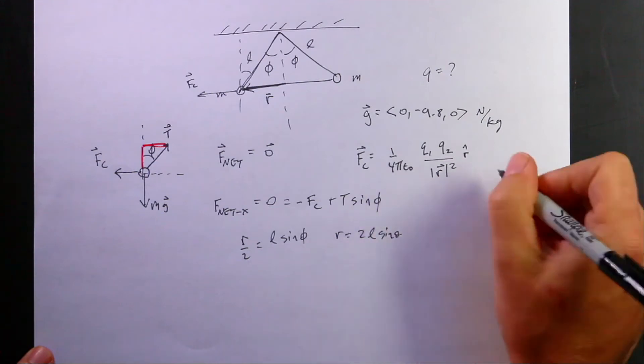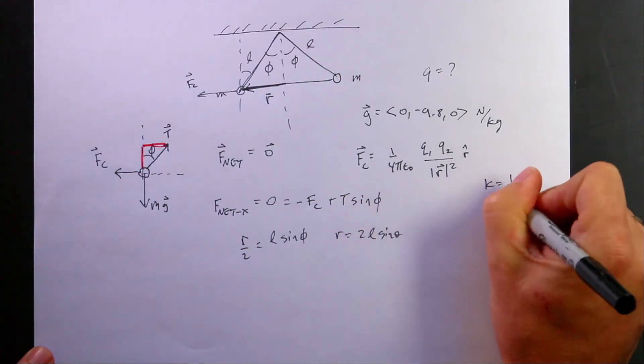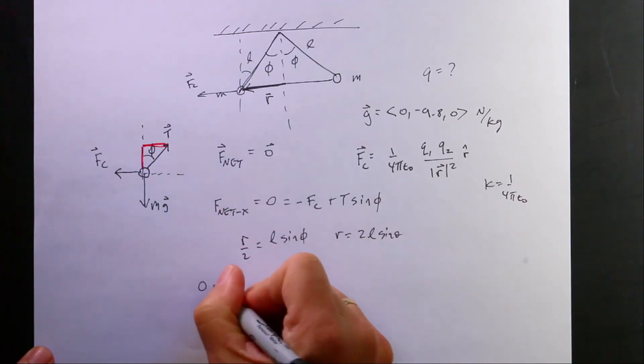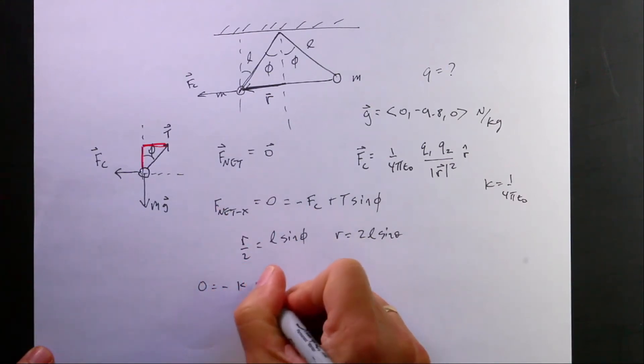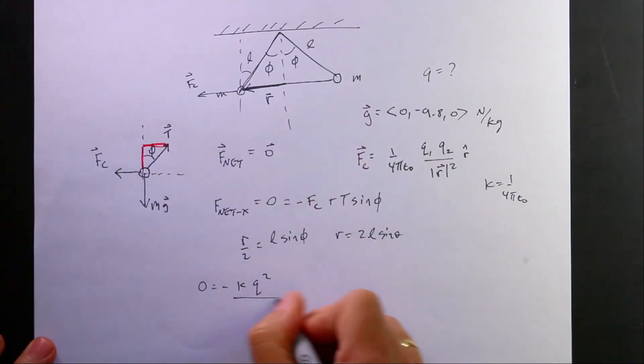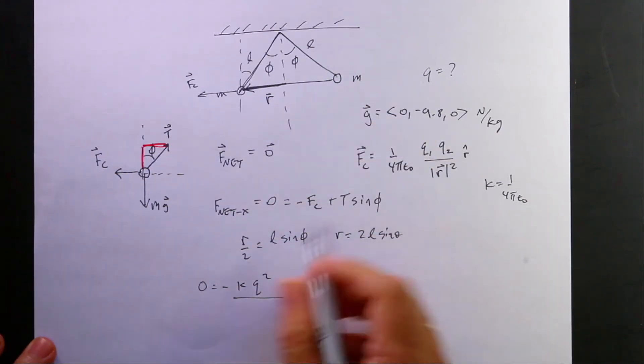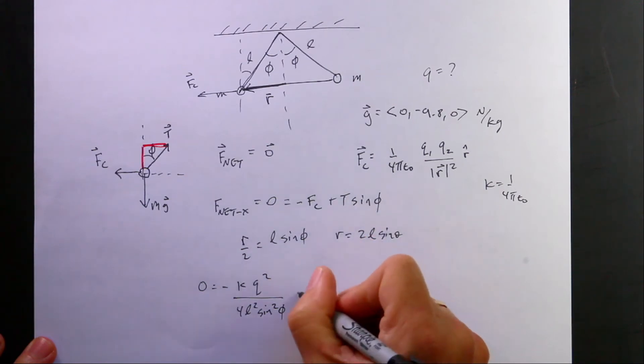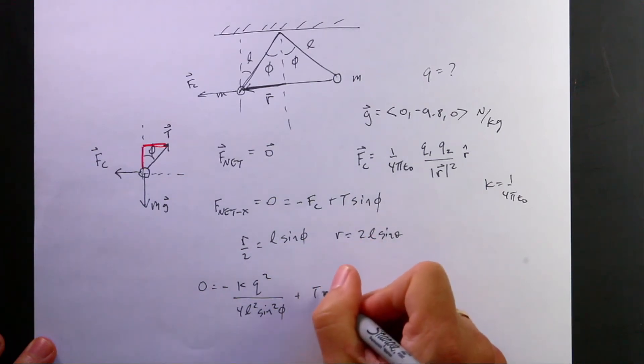I'm going to call K 1 over 4 pi epsilon naught just because it's easier to write. So this equation now becomes 0 equals negative K, Q squared, I'm assuming they both have the same charge, divided by R squared, and this is R. So 4L squared sine squared phi. And then I have plus T sine phi.